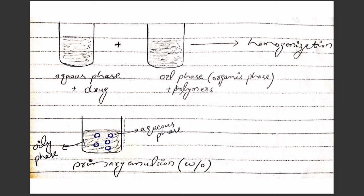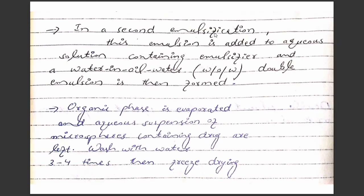We prepare the organic phase by dissolving the polymers, then mix both phases to obtain the primary water-in-oil emulsion. A second emulsification step is performed by adding this emulsion to an aqueous solution containing an emulsifier, giving a water-in-oil-in-water double emulsion. After evaporation of the organic solvent, we get an aqueous suspension of the microcapsules, and after drying we obtain the nanoparticles or nanocapsules.